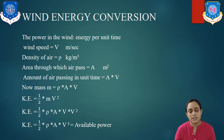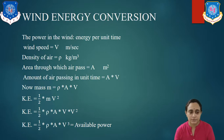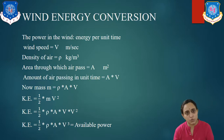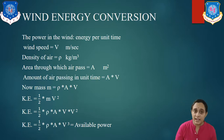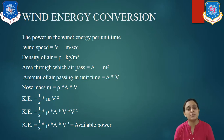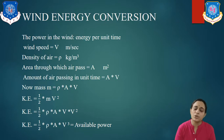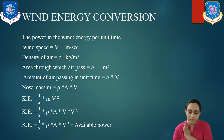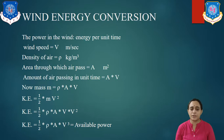Wind velocity is considered as V, with the unit meter per second. Density of air is considered as ρ (rho), in kg per cubic meter. Area is capital A, with unit square meters. The amount of air passing through is area multiplied by velocity, i.e., A × V. Mass M is equal to density times the amount of air passing: M = ρAV.